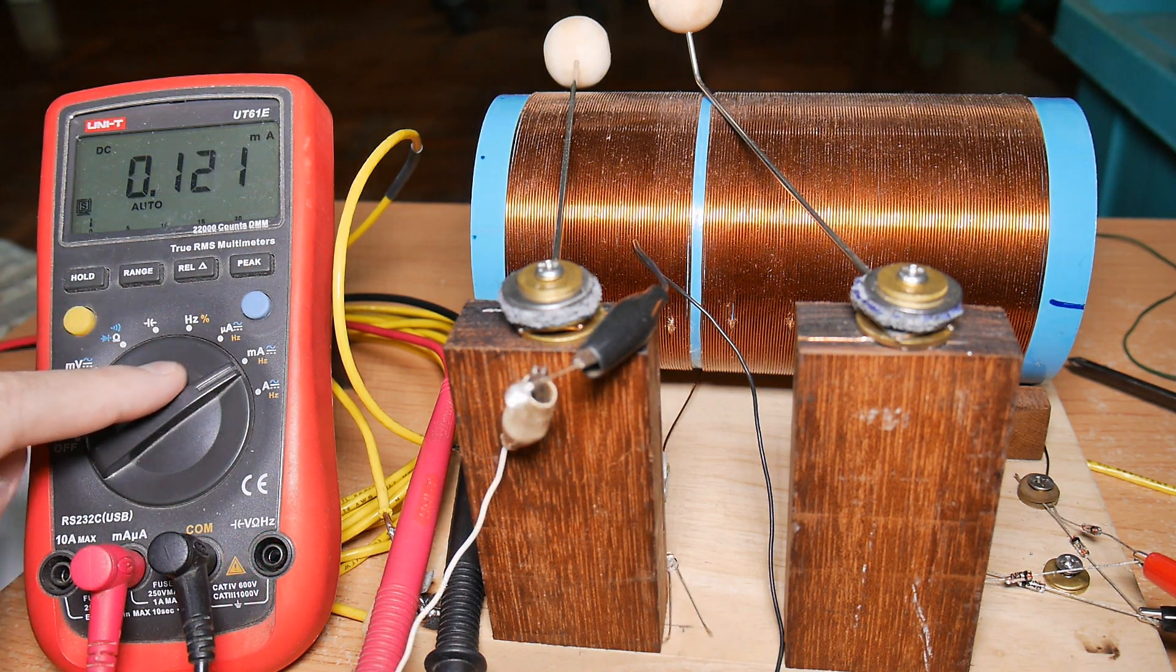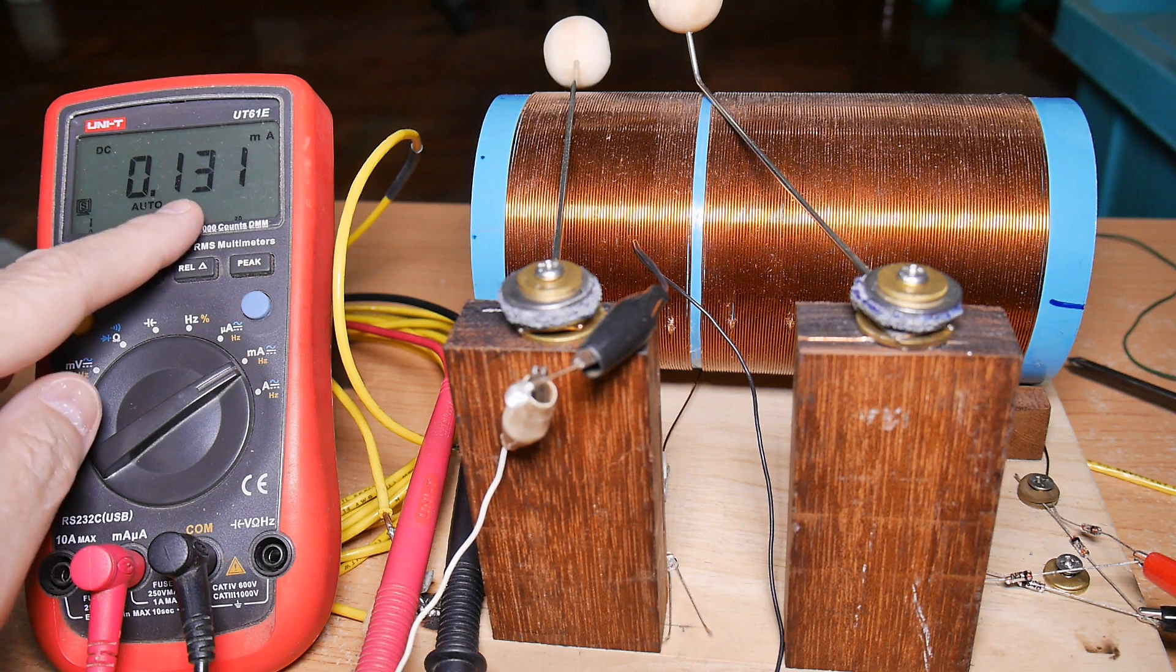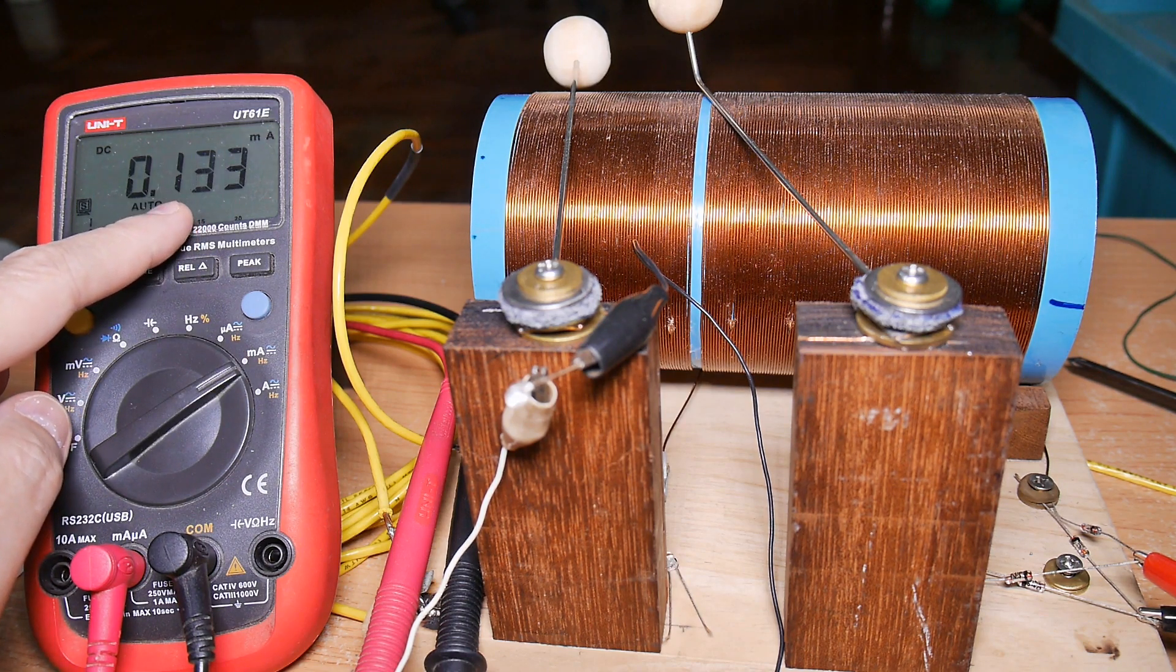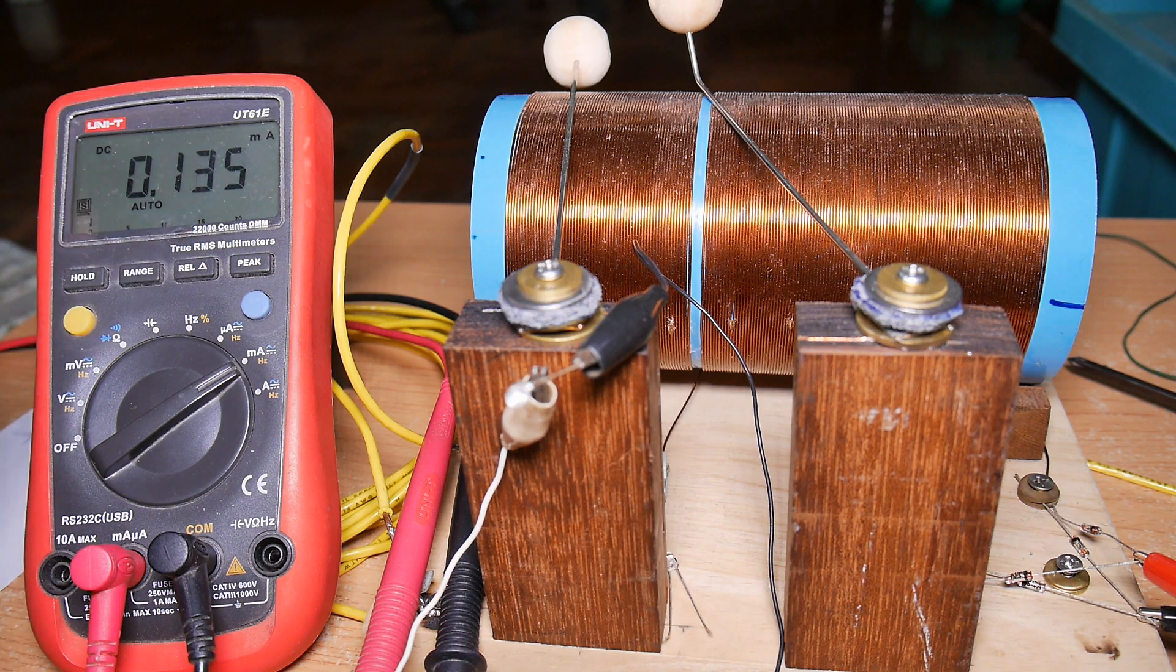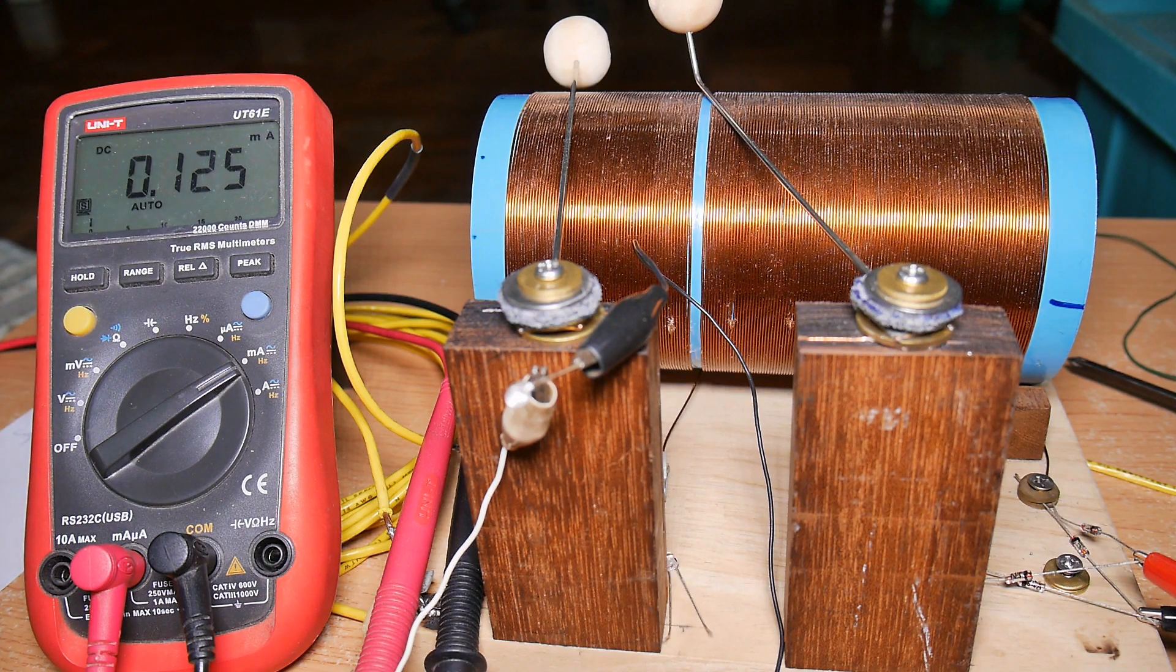Here you can see I've got it set up for current. This is milliamps. And basically I'm getting the same reading as I did when I only had a single diode. So 0.12, 0.13 milliamps. So not huge.